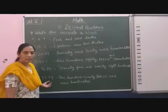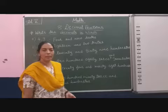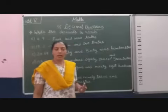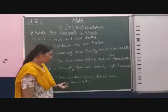Because 0.09 is given. So in the fraction we write as 9 by 100. So we will read as 9 hundredths.